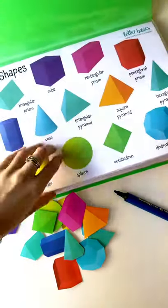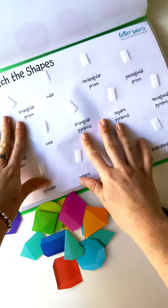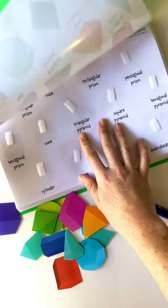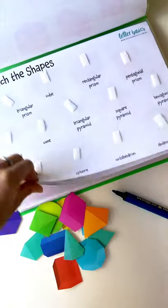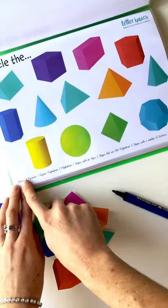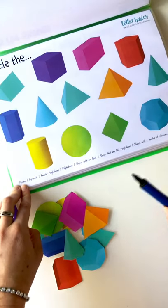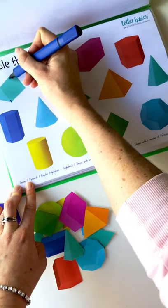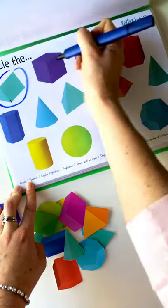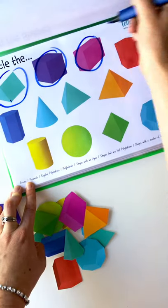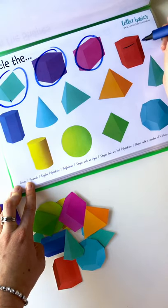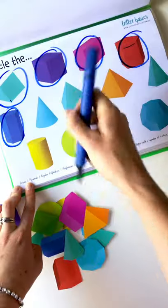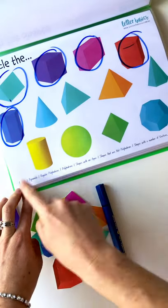And back up here, so matching up the shapes you can use this one as a reference. Then we've got the prisms. So now that we've covered that last activity, I know that this is a prism because it's got a shape this side, identical shape this side, joined by faces. As is this one, this one, this one. Shapes on top and the bottom, and this one. So they're my prisms.